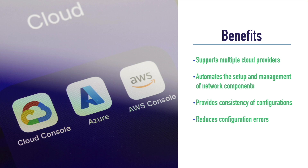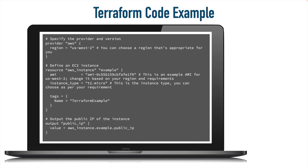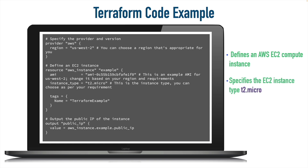Although our purpose in this course is not to make you into a Terraform coder by any means, I want to give you a sense for what it looks like. Here's an example of Terraform code that was generated by ChatGPT. I asked ChatGPT to write some Terraform code that would allow me to provision an EC2 compute instance, and this is what it gave me. What this does is it defines the AWS EC2 compute instance — here's the type of instance, because we can provision very high-powered compute instances or maybe very low-powered instances that we can use in the free tier. And it's also identifying the AWS region in which we're going to provision this EC2 instance. This is just a simple example of what we can do with Terraform.